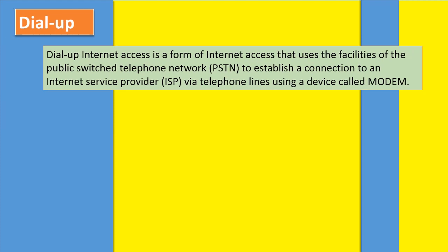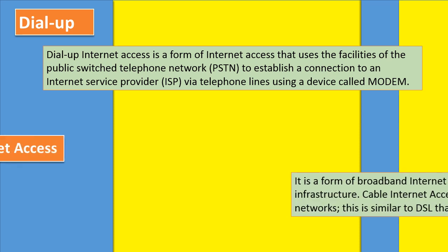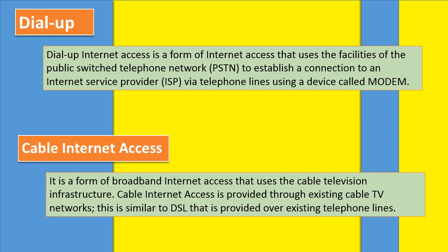Dial-up internet access is a form of internet access that uses the facilities of the public switched telephone network to establish a connection to an internet service provider via telephone lines using a device called modem. Cable internet access is a form of broadband internet access that uses the cable television infrastructure, similar to DSL that is provided over existing telephone lines.